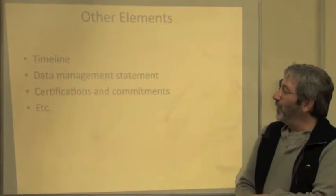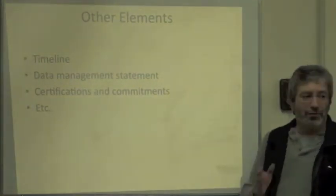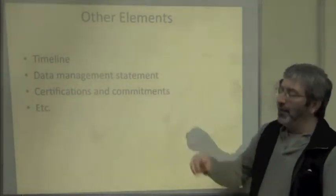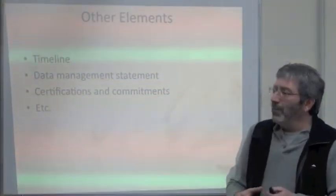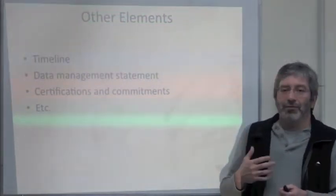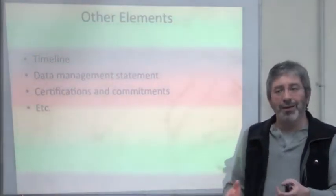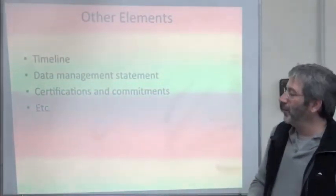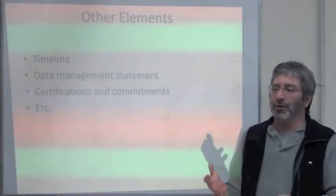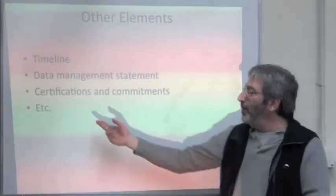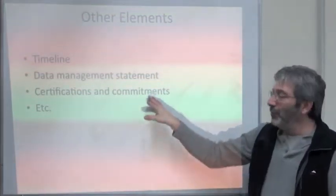Those are the seven core elements. Different proposals will have additional elements — commonly a timeline for when each thing will be done, a data management statement (which can be as simple as putting data in Access databases, but ideally should include a vision for sharing your data, turning it into another benefit). Often you also have to provide certifications and commitments, such as the director committing to releasing your time, or institutional-level certifications like non-profit status. Don't miss those — they can be critical.